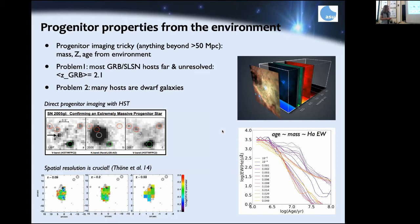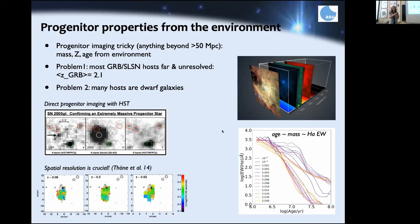Something I'm very interested in is deriving properties of the progenitor star or system — mostly for collapsar-type massive stars, to find out what kind of star exploded. The supernova community has been very successful at this in the local universe for supernovae from smaller stars of 8–15 solar masses, using archival HST images taken before the explosion.